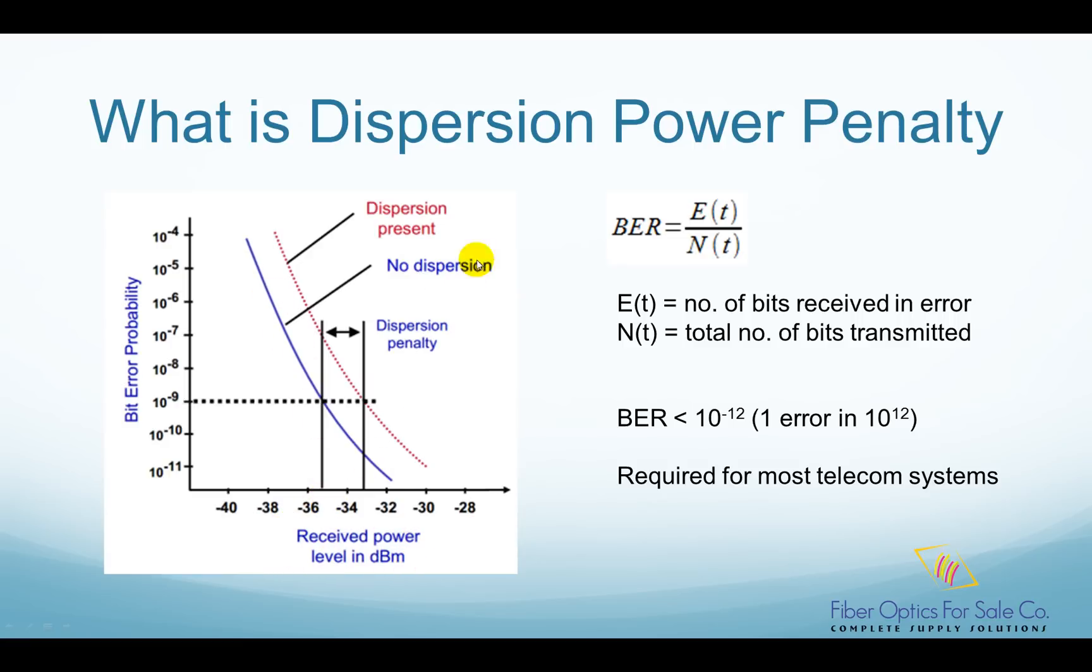Blue curve has no dispersion. Red curve has dispersion. So if we want to maintain the same bit error ratio of 10 to the power of minus 9, additional power is needed, which is about 2 dB.